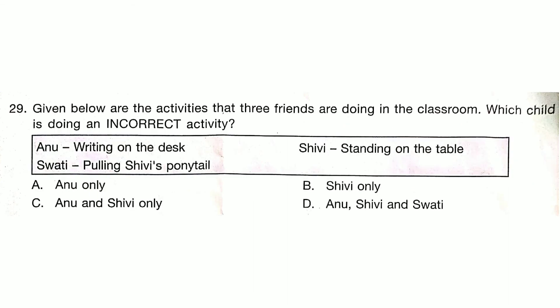Answer is Option D. Given below are the activities that three friends — Anu, Shivi and Swati — are doing in the classroom. Which child is doing an incorrect activity? Answer is Option D.